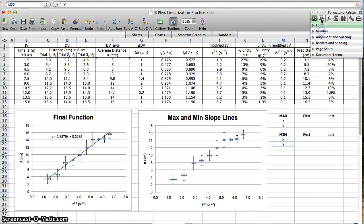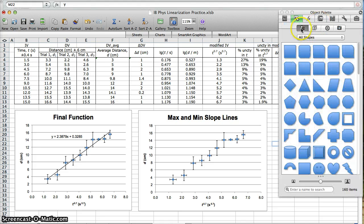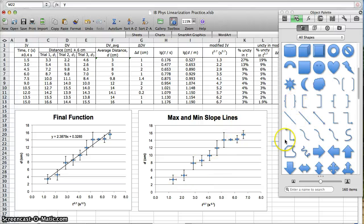As a reminder, max and min slope lines we draw using just the first and last data points. You ignore everything in between.